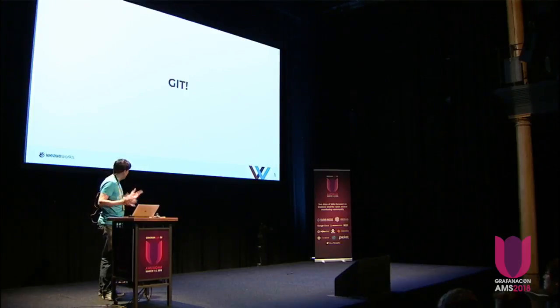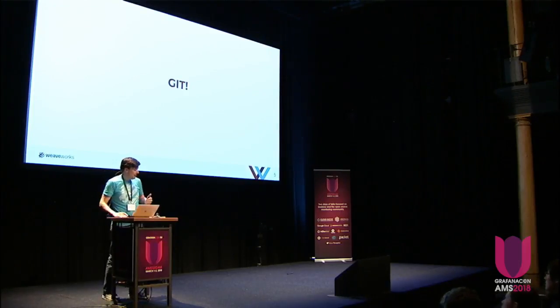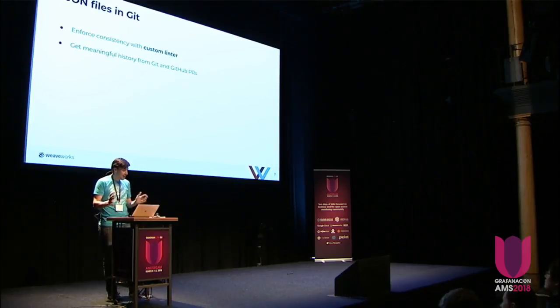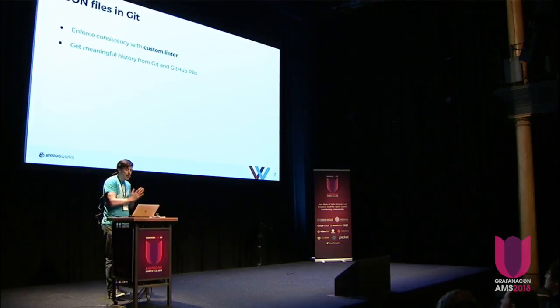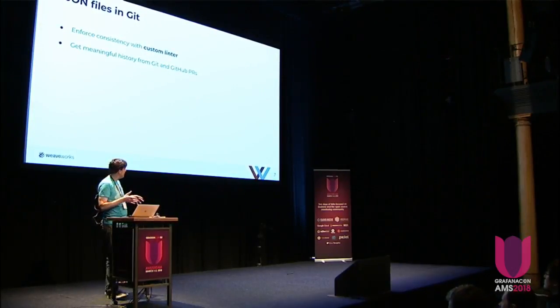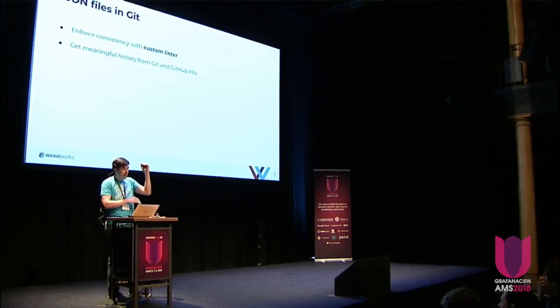So the solution to this is to stick everything in Git. This pattern of storing declarative data in Git and deploying that to your cluster is something called GitOps, which is something that we like quite a lot. A while ago we started storing all of our Grafana JSON files in Git, and then we had a custom linter that enforced some things — that all of the IDs were unique, a few style rules that we liked, like zero-based y-axes for percentage graphs so that things are a little bit more meaningful. And this was great because we had meaningful history, and we could do code reviews to check things were right.